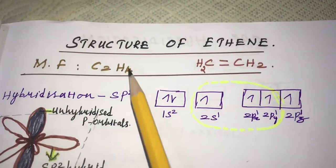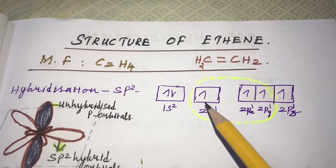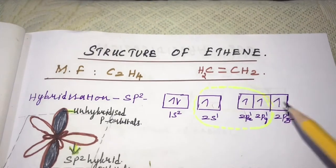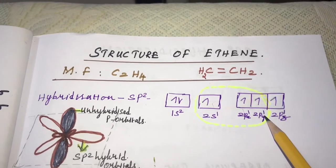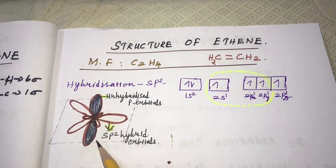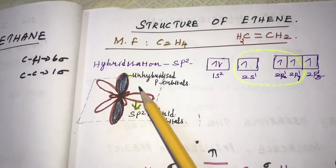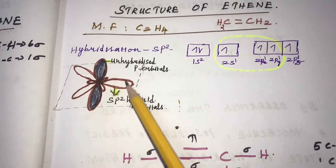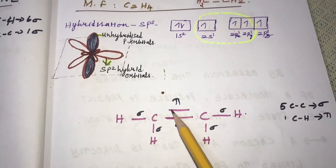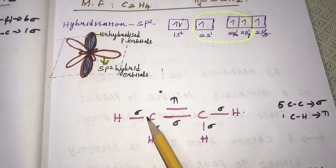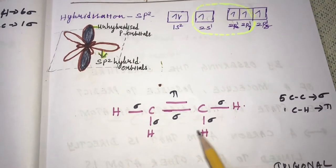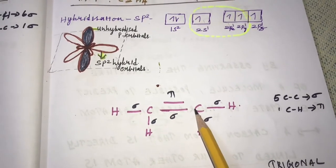The molecular formula of ethene is C2H4, represented as CH2=CH2. The hybridization here is sp2 hybridization: the 2s orbital hybridizes with two 2p orbitals (px and py) of carbon to form sp2 hybrid orbitals. The unhybridized pz orbital remains perpendicular to the sp2 plane. In ethene, there is one C–C sigma bond, four C–H sigma bonds, and one C–C pi bond.